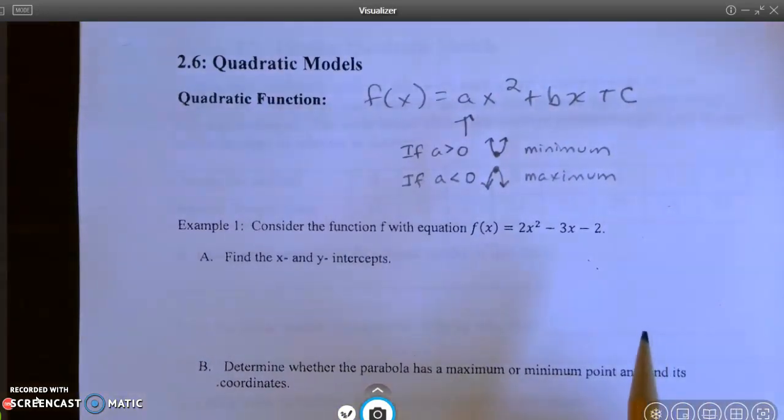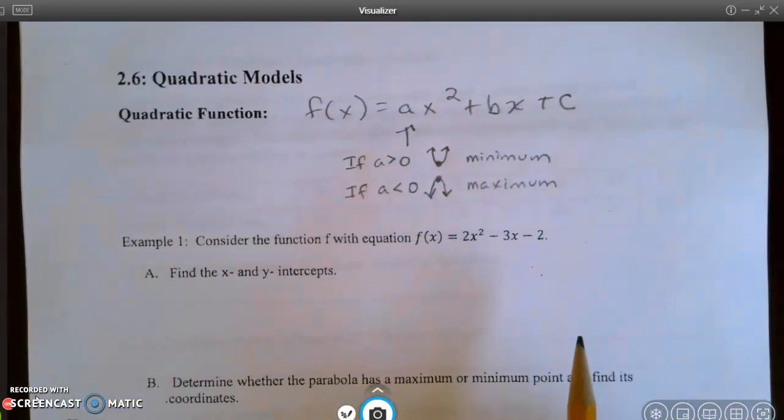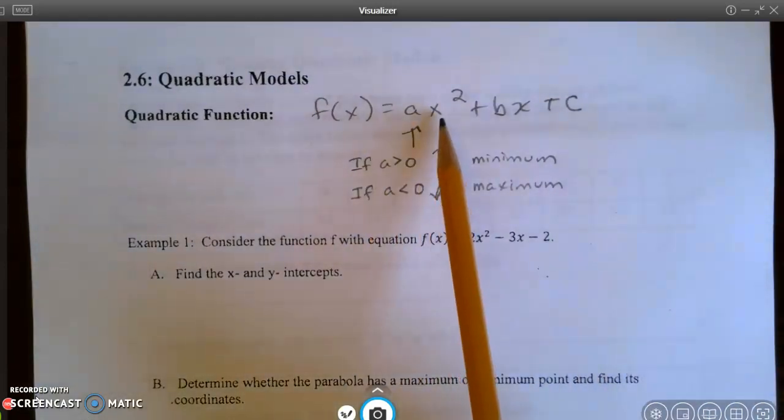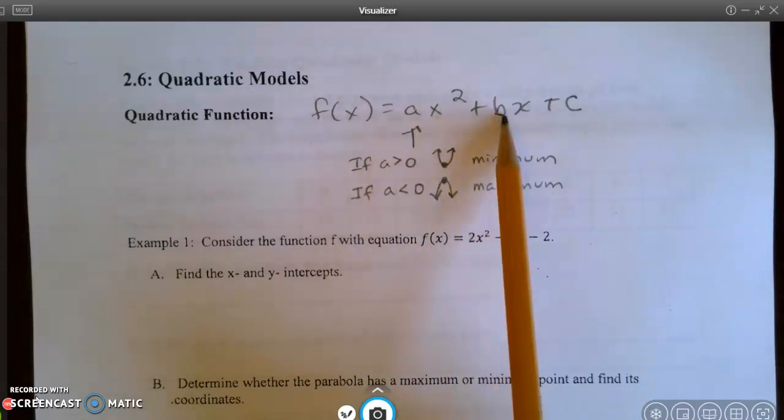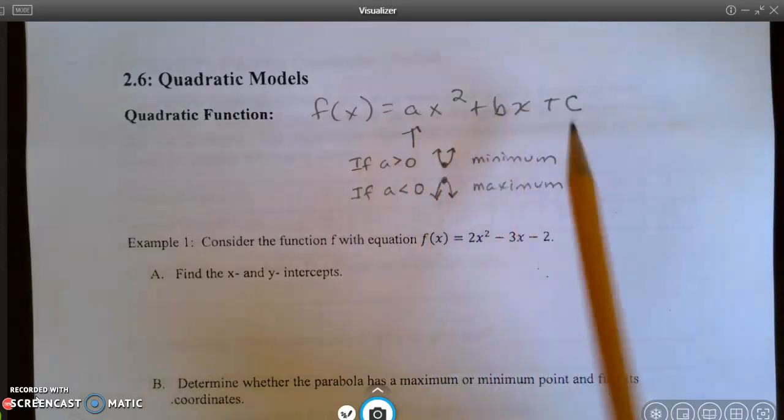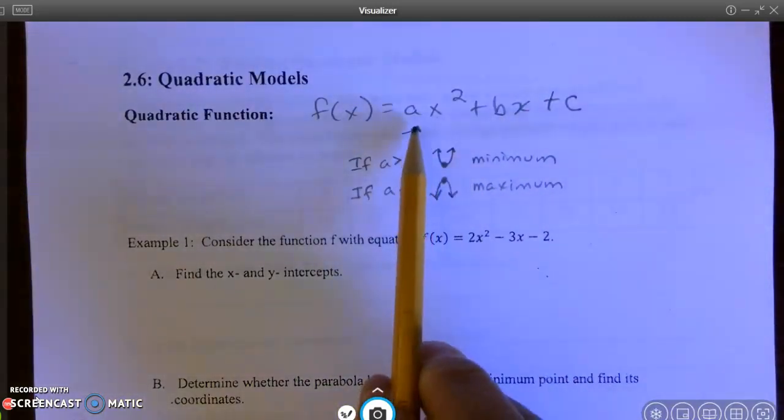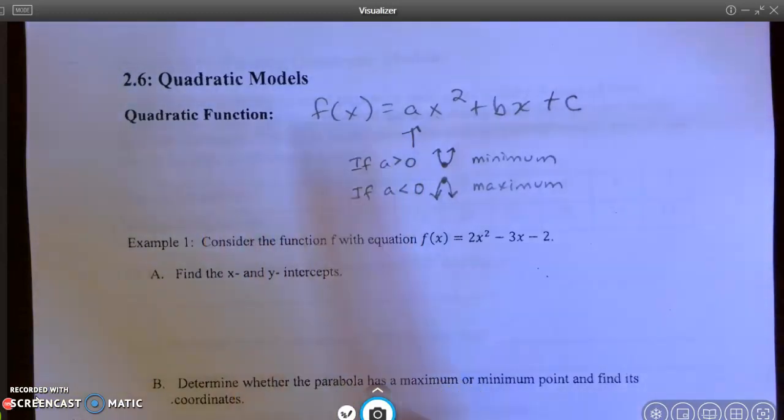Notice that a never equals zero, and that's because if a equals zero, this term would go away, because zero times x² would be zero, and we would just be left with bx + c, which is linear. So that's why a can't equal zero if it's a quadratic.